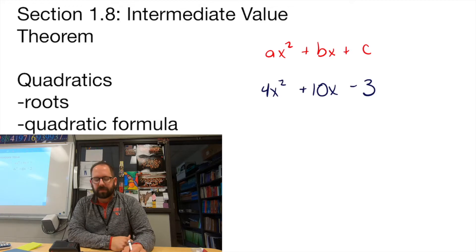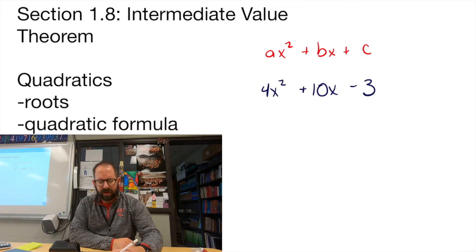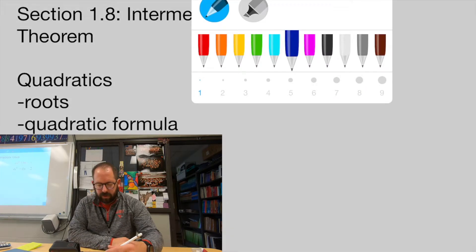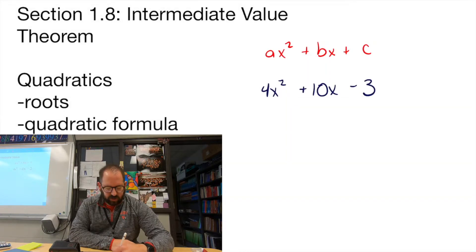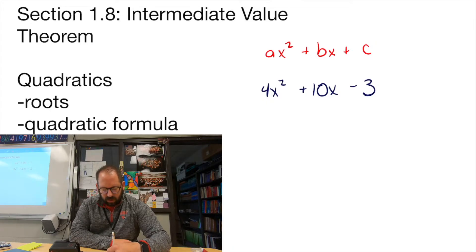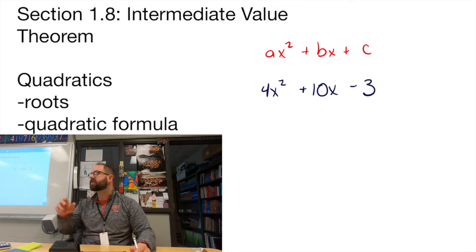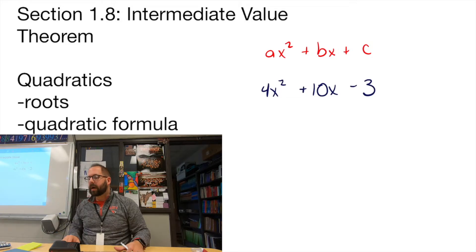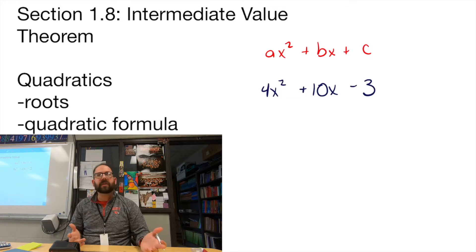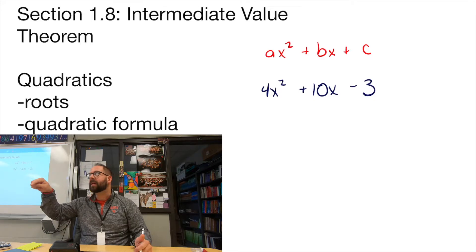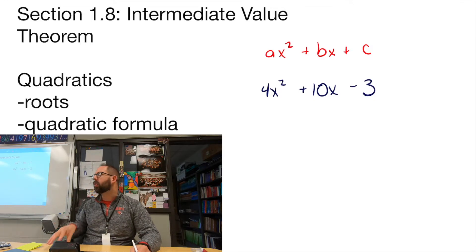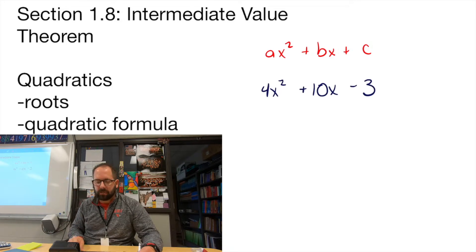Those will be the first two examples we do. The quadratic formula is x equals negative b plus or minus square root of b squared minus 4ac, all divided by 2a. That's the formula you have to use on the worksheet today — the one I gave you about three days ago. It's due tonight by 11:59 p.m. Just submit it on Google Classroom. I don't want any papers turned in anymore — everything's online.